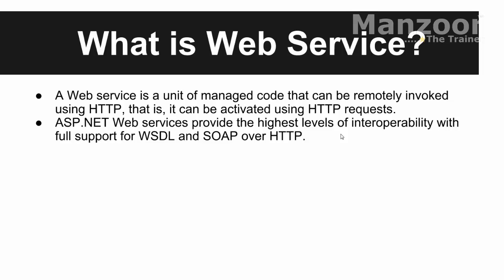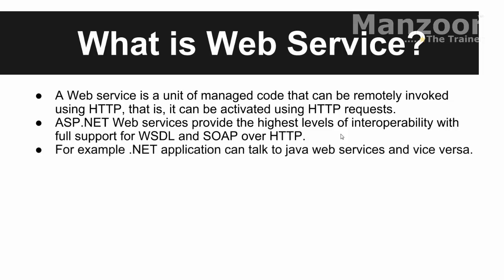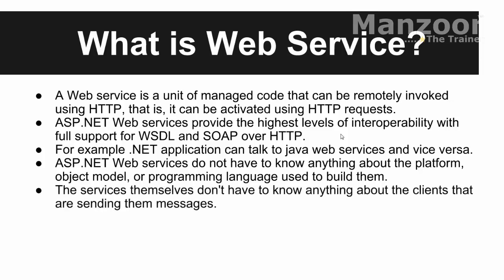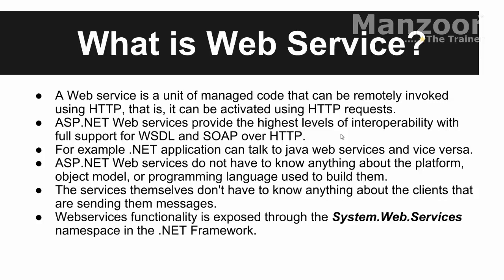WSDL gives the description about the service and SOAP messages are what we push over the network. For example, a .NET application can talk to a Java web service and vice versa. ASP.NET web services do not have to know anything about the platform, object model, or programming language used on the other side. Both client and server need not know about each other — they just need to understand the SOAP message. They pass the SOAP message and send results back via SOAP message. SOAP messages are nothing but XML messages. Web services functionality is exposed through System.Web.Services.